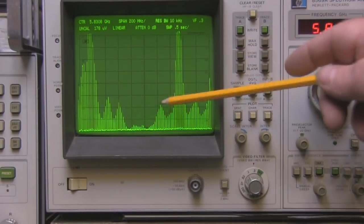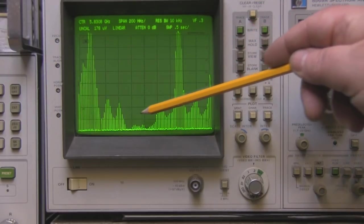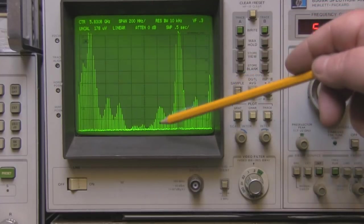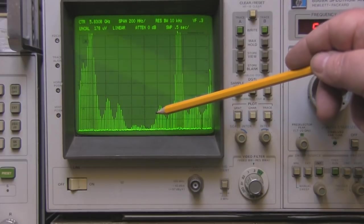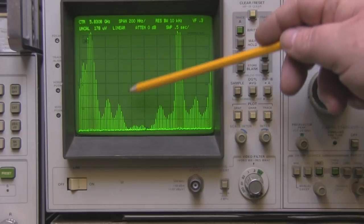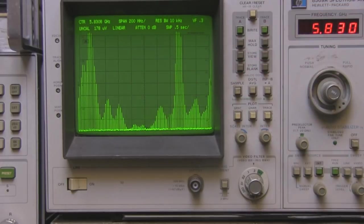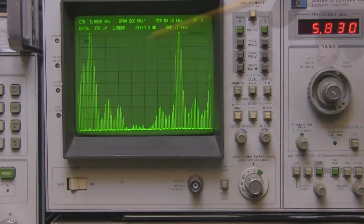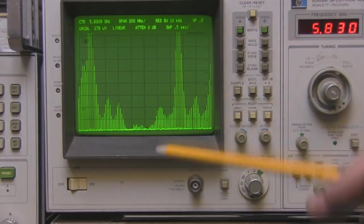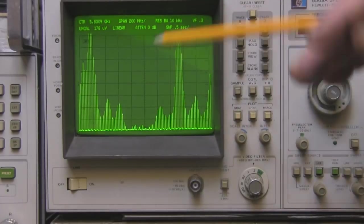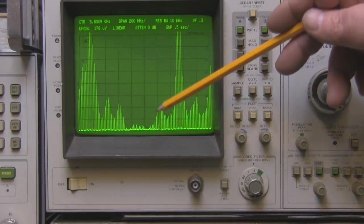I've got the spectrum analyzer centered on 5.830 gigahertz. Look how wide the bandwidth is on this little panel antenna. Really nice frequency response all the way up here, so it'll work into the six gigahertz and all the way down there as well. It's a lovely wideband panel antenna. I'm a little bit surprised how nice this looks on the spectrum analyzer.